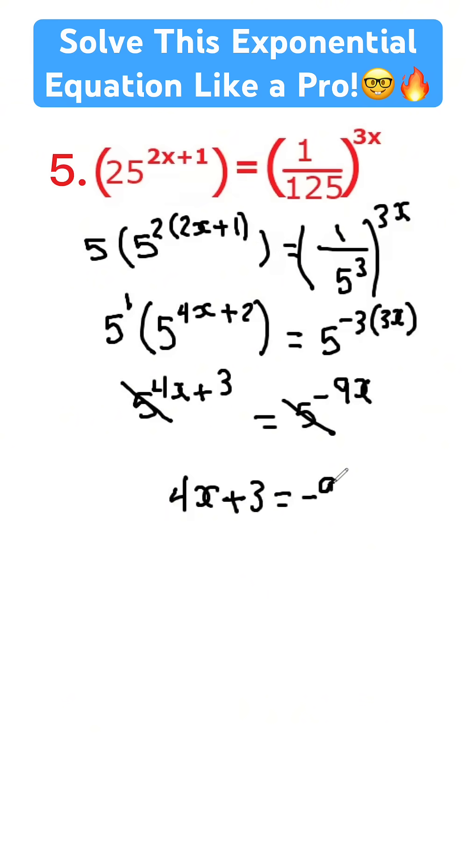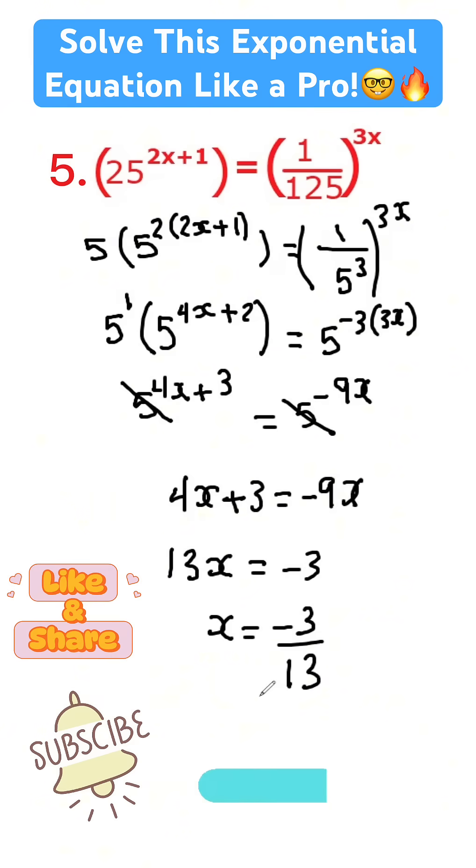I'm going to bring the negative 9x to this side and the 3 to that side. 4x plus 9x will be 13x equals negative 3, and therefore x equals negative 3 over 13.